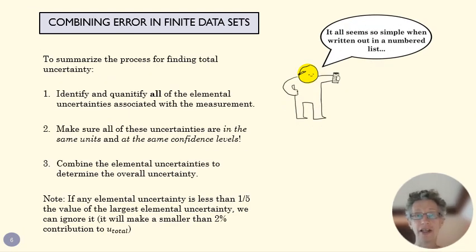All right, so to summarize finding a total uncertainty, you want to identify and quantify all the elemental uncertainties. That's your first step. Your second step is make sure everything is in the same units and the same confidence levels. And then finally we want to combine those values in terms of using quadrature. Now one little trick here is that if one elemental uncertainty is less than one-fifth of the largest elemental uncertainty, we can just ignore it. So that sometimes simplifies our math. And the reason for that is that quadrature is dominated by the larger numbers. If you have a large number, the result of that quadrature process is going to be close to that large number. And so if something's like I said less than one-fifth, it's going to make a very small difference to the overall result. So we can just throw it out.